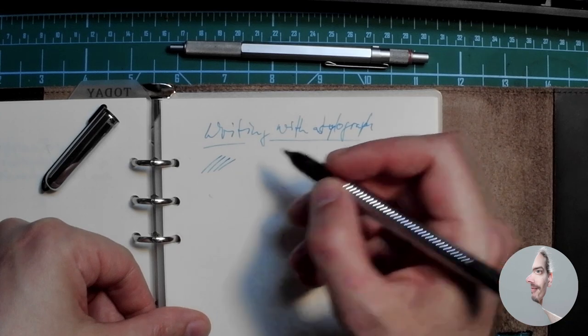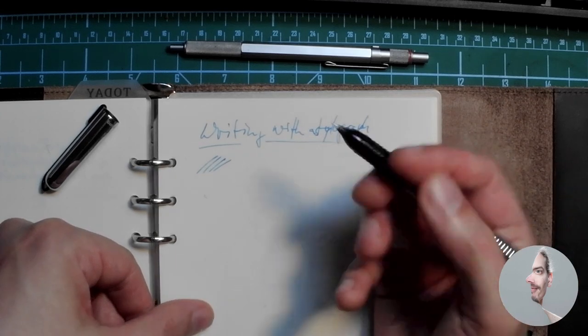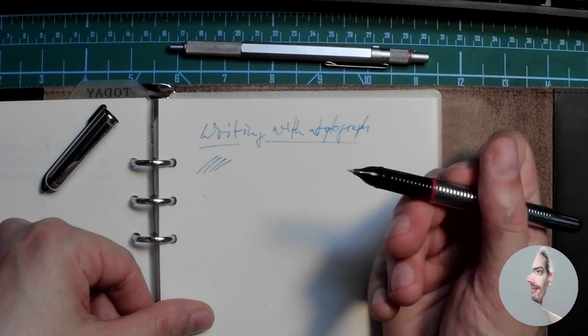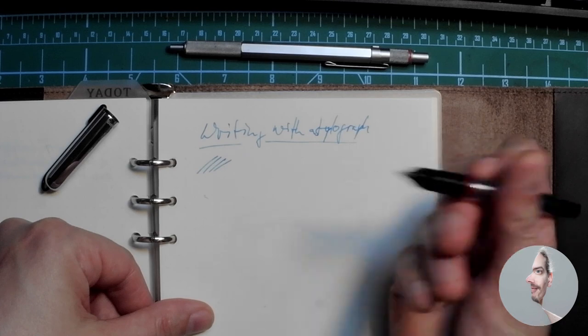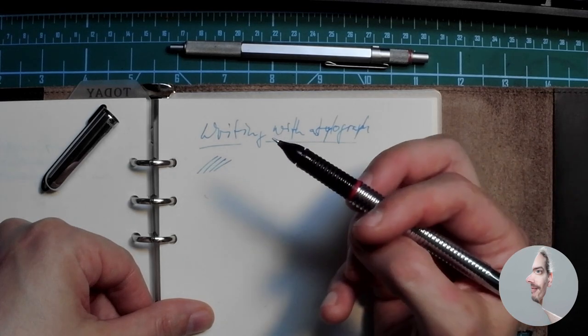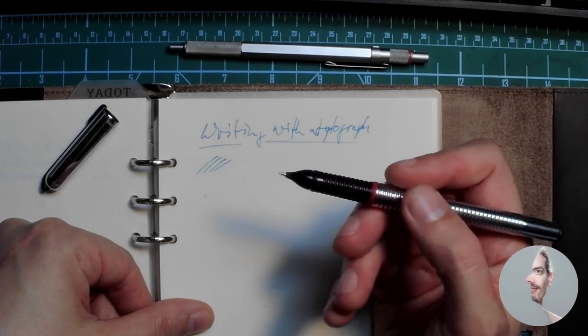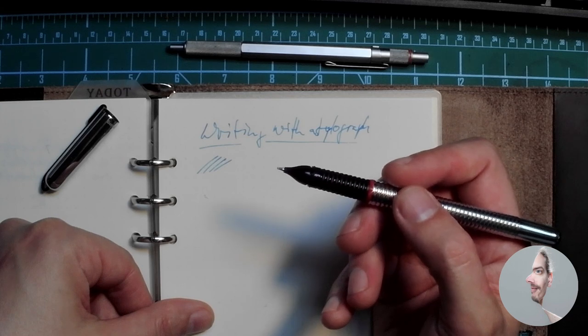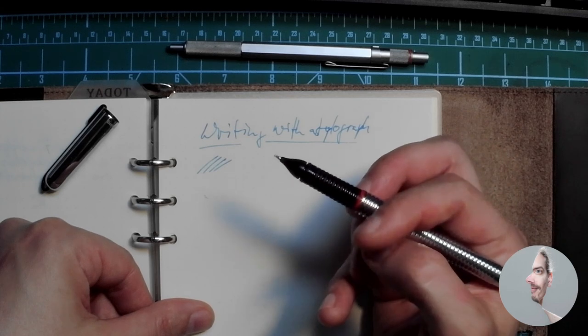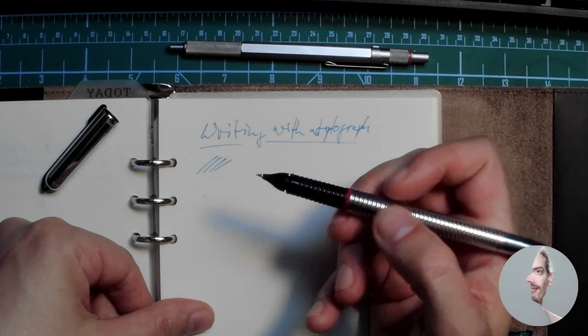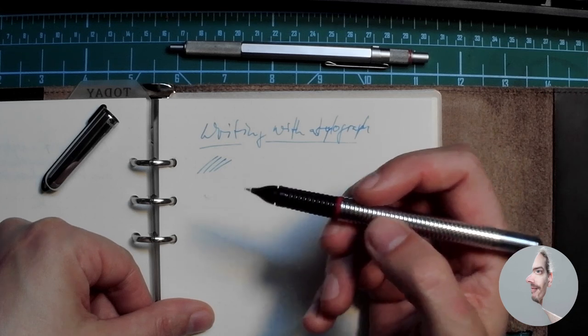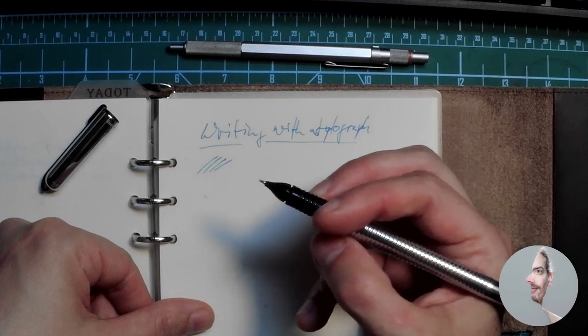So I can really recommend picking up one of these. I don't know of any other manufacturer than Rotring producing these. Actually Rotring produced the first one dubbed Tintenkuli somewhere in the 20s or 30s. It's a pretty old concept but it's not really widespread.